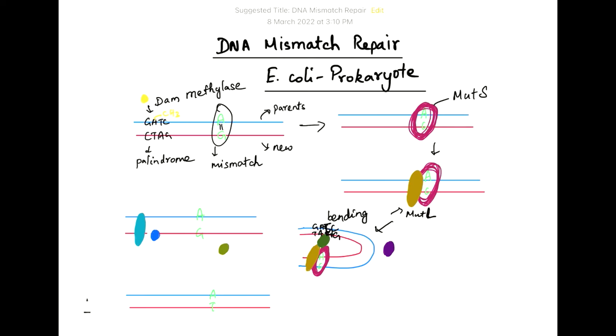And it is this MUT-H protein that will bind at the GATC region. And what will happen is that the MUT-H protein will create a nick or cut in the DNA at the GATC region.